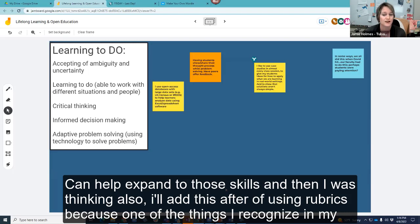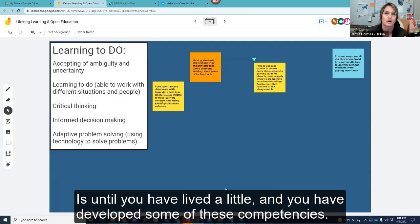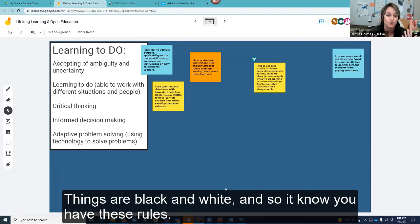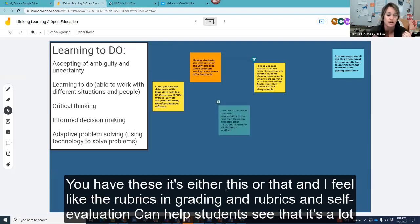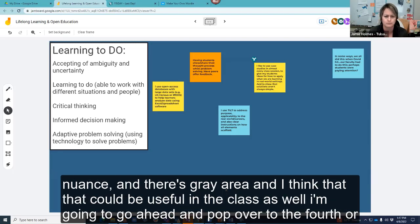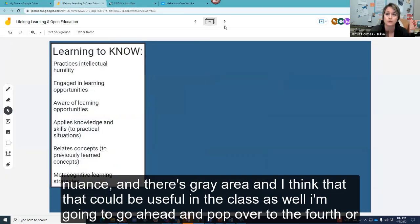And then I was thinking also, I'll add this after, of using rubrics because one of the things I recognize in my own son is until you have lived a little and you have developed some of these competencies, things are black and white. And so, you know, you have these rules, you have these, it's either this or that, and I feel like the rubrics in grading and rubrics in self evaluation can help students see that a lot of things are a continuum. And there's nuance and there's gray area and I think that that could be useful in a class as well.